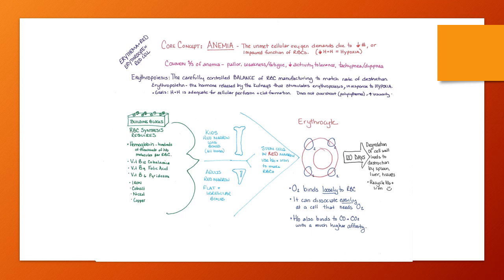Anemia is when you have unmet cellular oxygen demands due to a decreased number or impaired function of red blood cells — either decreased age or malformed red blood cells — leading to cellular hypoxia. Common signs and symptoms of anemia include pallor, weakness, fatigue, decreased activity tolerance — feeling short of breath or tired with normal activities — and tachypnea and dyspnea, specifically on exertion. Most people with anemia aren't acutely short of breath at rest but more so with activity.